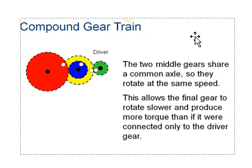A compound gear train is more than two gears that has one gear that has two gears on the same shaft. So let's say each one of these colored circles is a gear, and they're all different sizes and they're all put together.